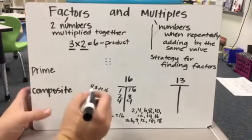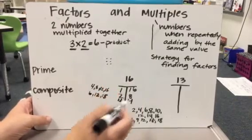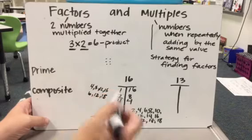Let me try 6. So 6, 12, 18. Again, I didn't land on 16. So 6 is not a factor of 16.